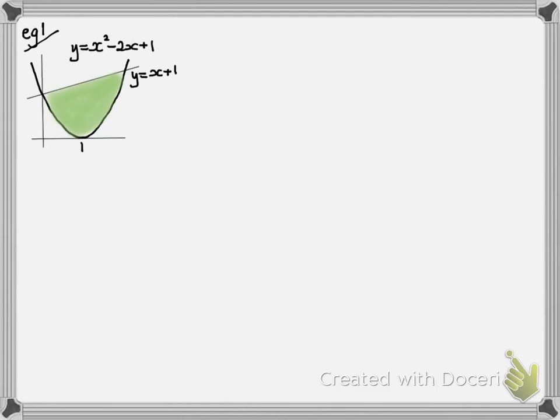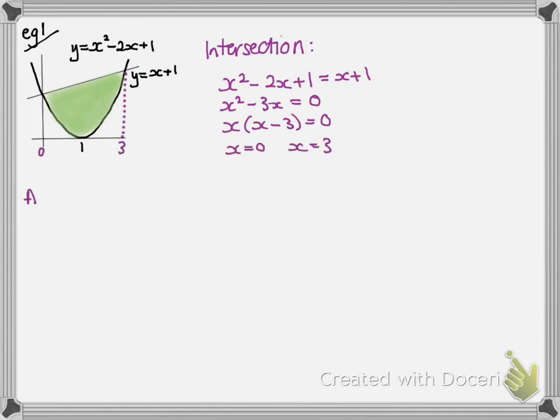So before we can do that, we need to know what limits we're using. So we need to look for those intersection points. So that's solving as you're used to. Put the equation of the curve equal to the equation of the line, and solve that equation. So we now have our limits between 0 and 3.